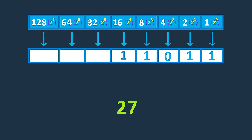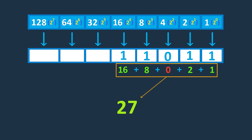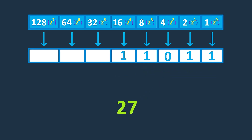In the binary system, each digit represents a power of 2 starting from the rightmost digit. For example, decimal 27 in binary would be 11011. Binary numbers seem to be very long, but they are much easier for a computer to handle, since each bit or binary digit can be represented by an electrical signal which is either on or off.